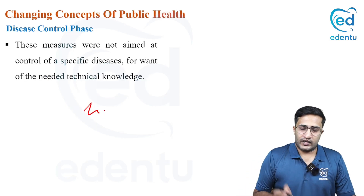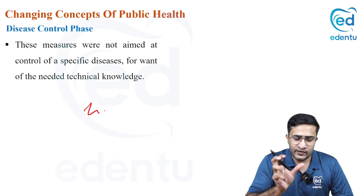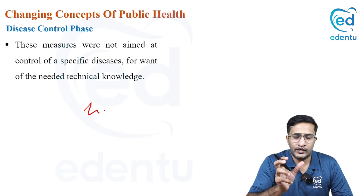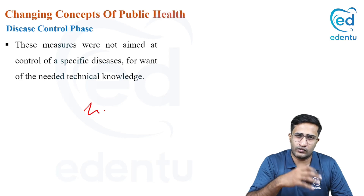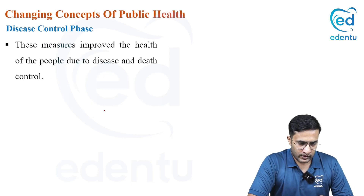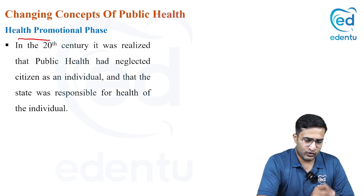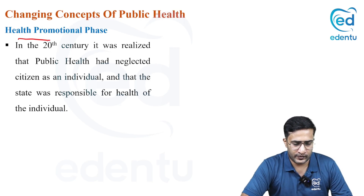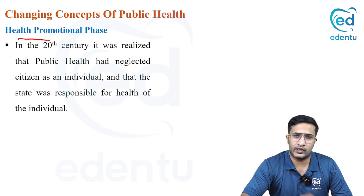These measures were not aimed at controlling any specific disease. They did not highlight any particular disease but thought these could be the reasons for many diseases, so they aimed at these two measures — water and sewage. After that, the health promotional phase came, from 1920 to 1960.